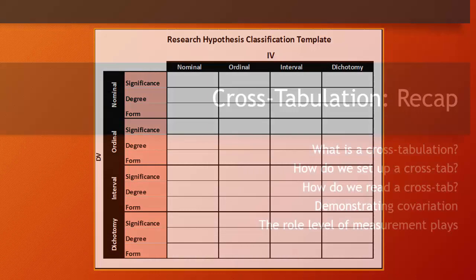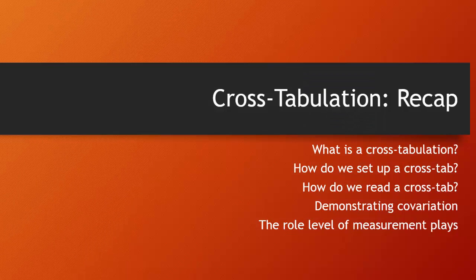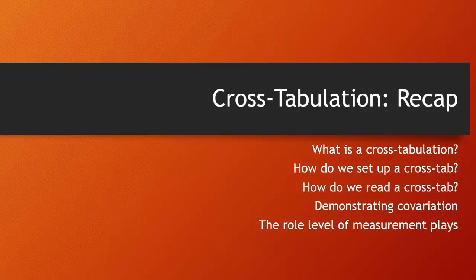So to recap, we covered what is a cross-tabulation, how we set up a cross-tab, how we read cross-tabulations. We talked about demonstrating covariation through the idea of statistical significance, degree, and form. And finally, we spent some time thinking about the role that the level of measurement plays in helping us understand covariation.